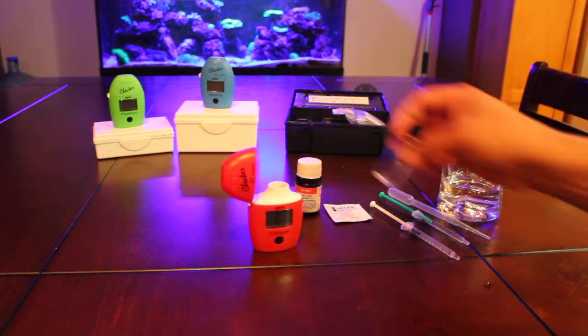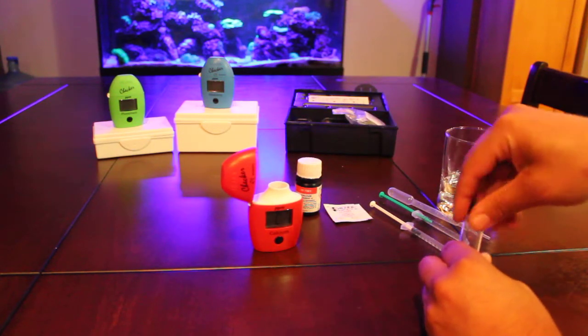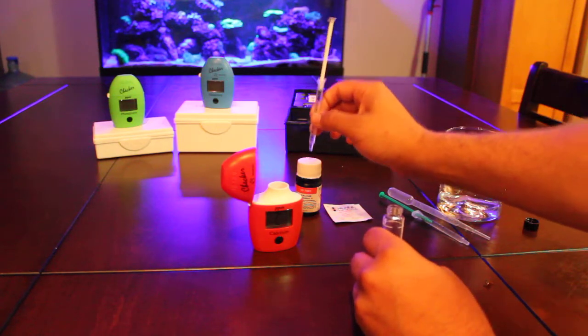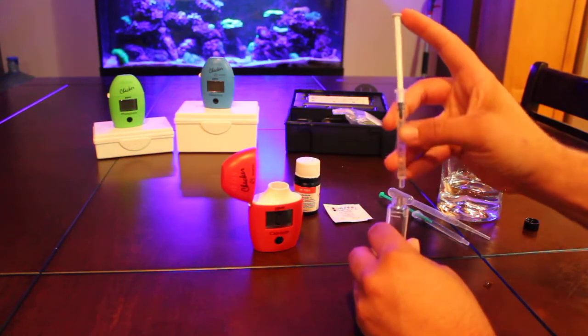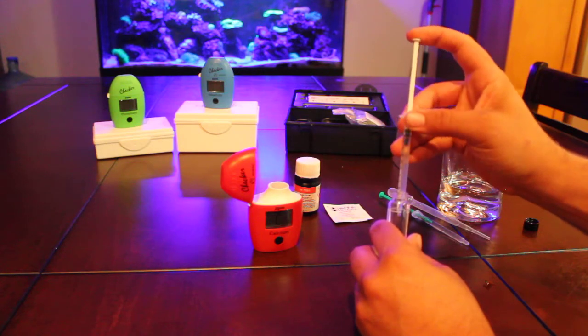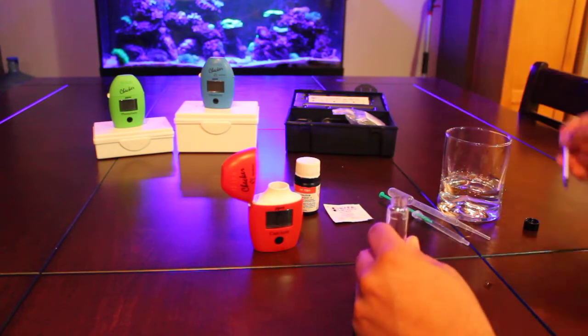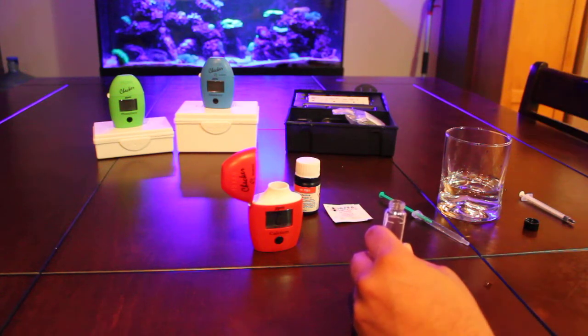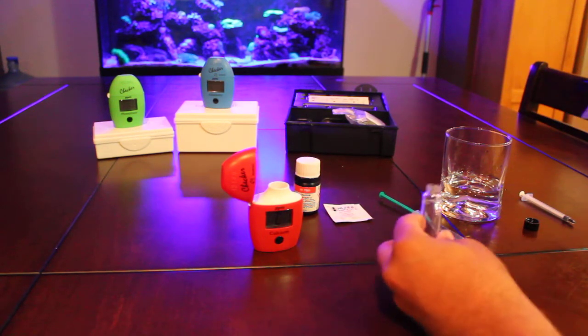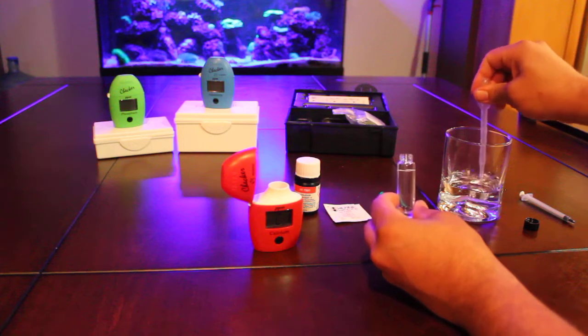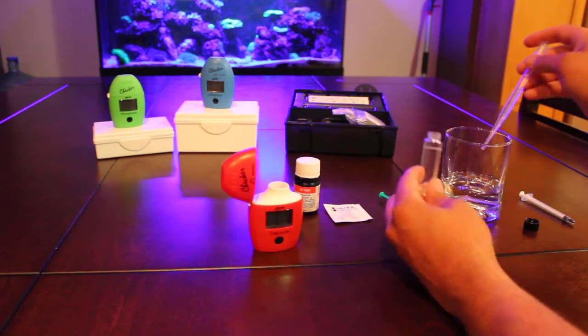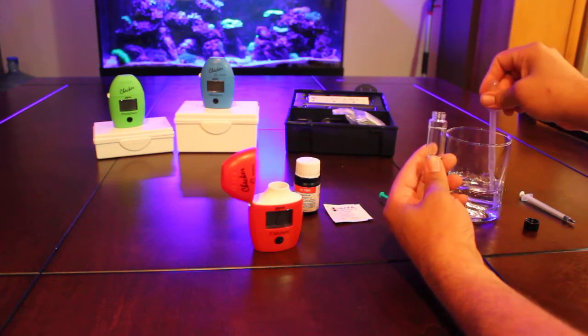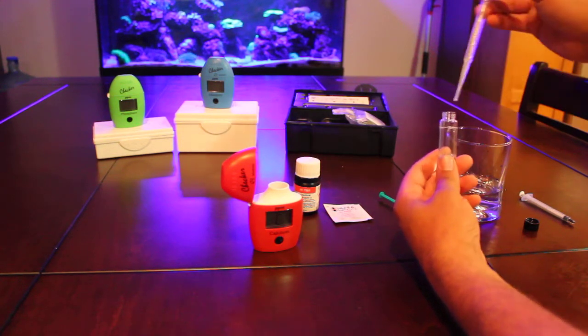Okay, so time to add number one. All you're doing is using one mil of reagent A. I've already taken it out to kind of speed this up a bit. Put that all in there, and then you're using RODI water from your system, just plain RODI water, no salt, no nothing. And you want to fill it up to the 10 mil mark with RODI water and the reagent A.